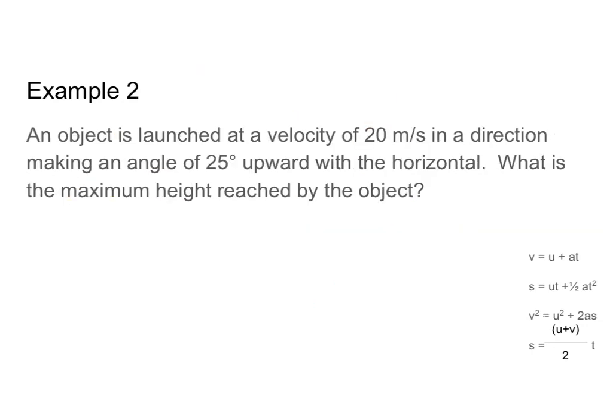Let's do one more before I let you go. An object is launched at a velocity of 20 meters per second in a direction making an angle of 25 degrees upward with the horizontal. What is the maximum height reached by the object? Here is my object being launched at 20 meters per second at an angle of 25 degrees. When you see the phrase 'angle upward with the horizontal,' just assume theta is 25 degrees — don't worry too much about the wording.